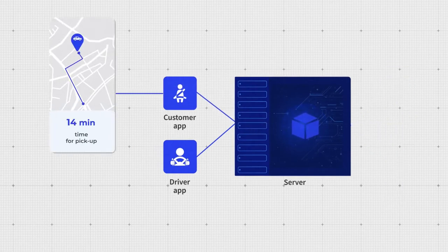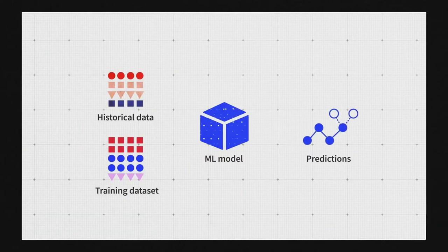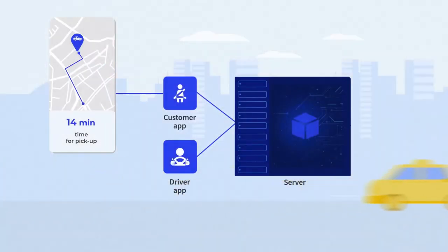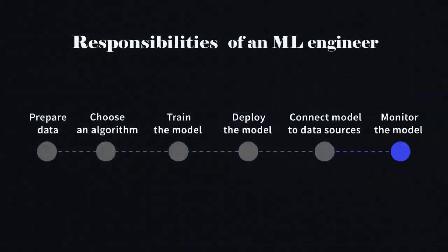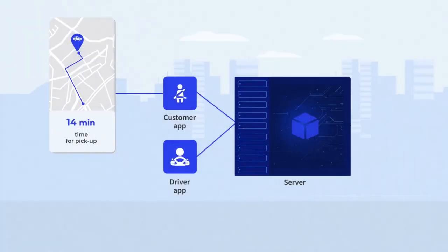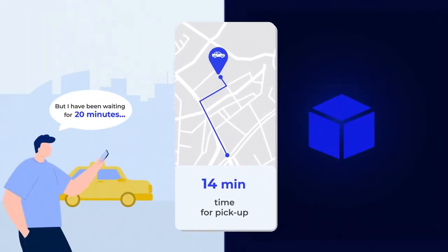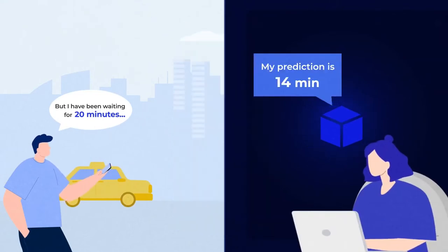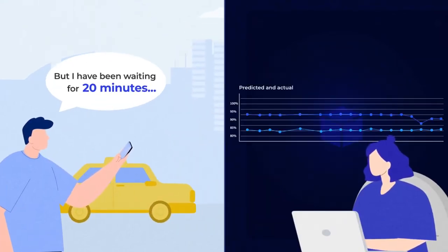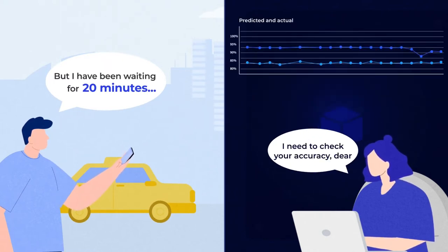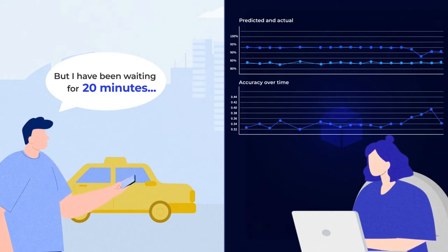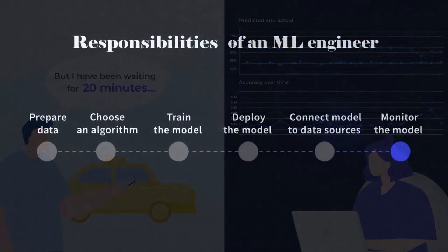But here is another problem. We tested the model on historical data, but how well does it work in real-life conditions? You need to track its performance. This is one of the main concerns of a machine learning engineer — model performance monitoring and evaluation. Let's say the model predicted a taxi would arrive in 14 minutes, while it actually took 20 minutes. An ML engineer would set up monitoring infrastructure to compare real-world data to the model's predictions to understand its accuracy and how it changes over time. Monitoring systems provide ML engineers with the data to decide whether the model performs well and if it needs retraining.